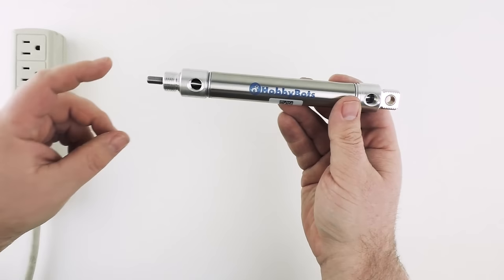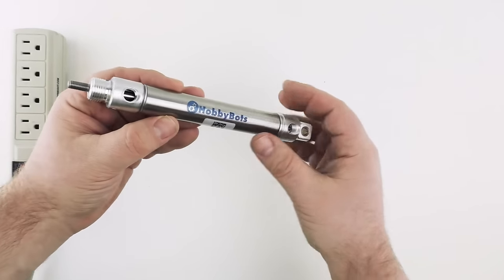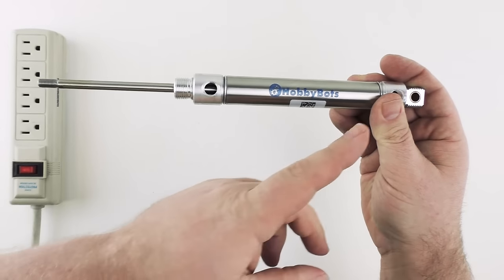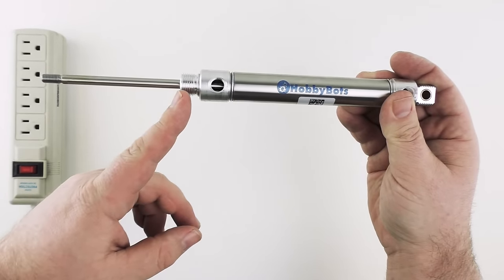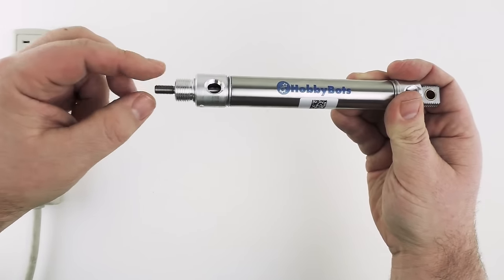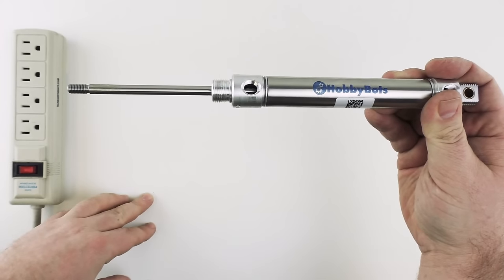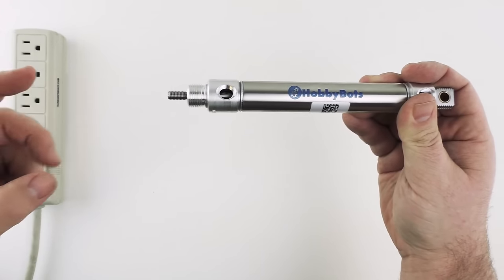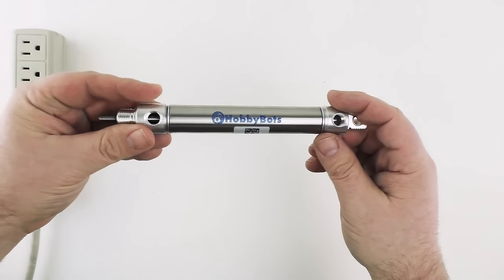The two most common things you're going to hear are stroke and bore. We'll start with stroke. Stroke is the distance that the cylinder rod extends when air is applied. You can see here that this cylinder has a stroke of three inches. That means that when air is applied this rod is going to extend three inches. The longer the stroke the longer this will extend and the longer the overall body of the cylinder will be.